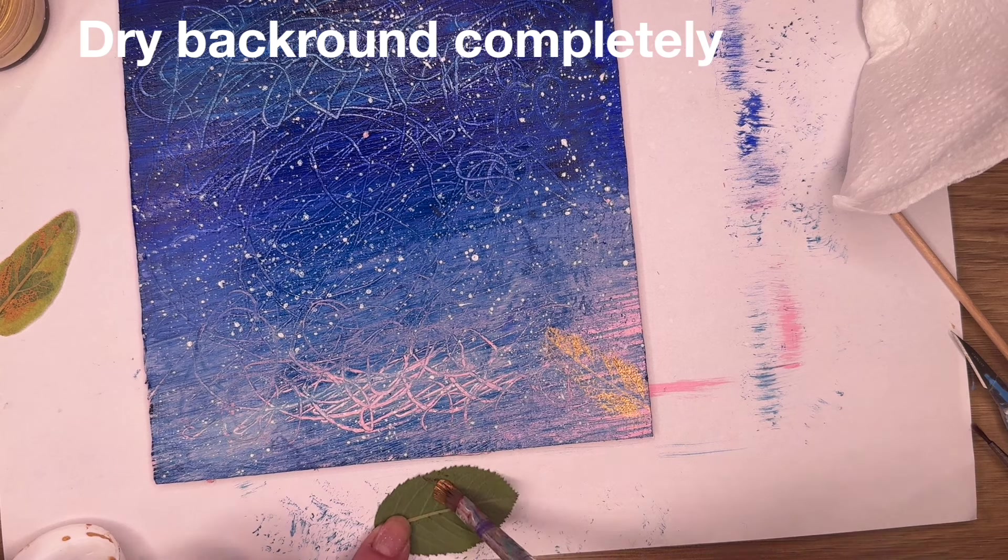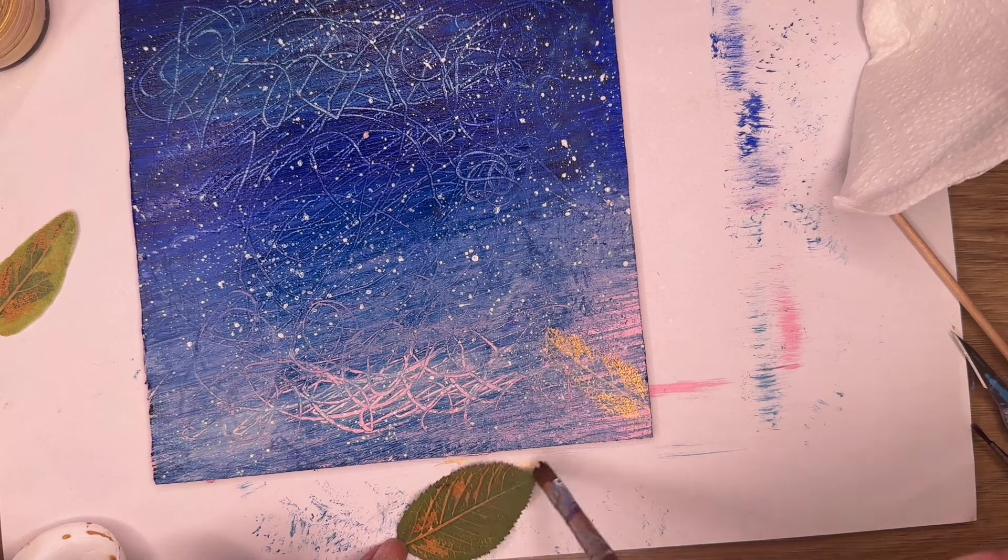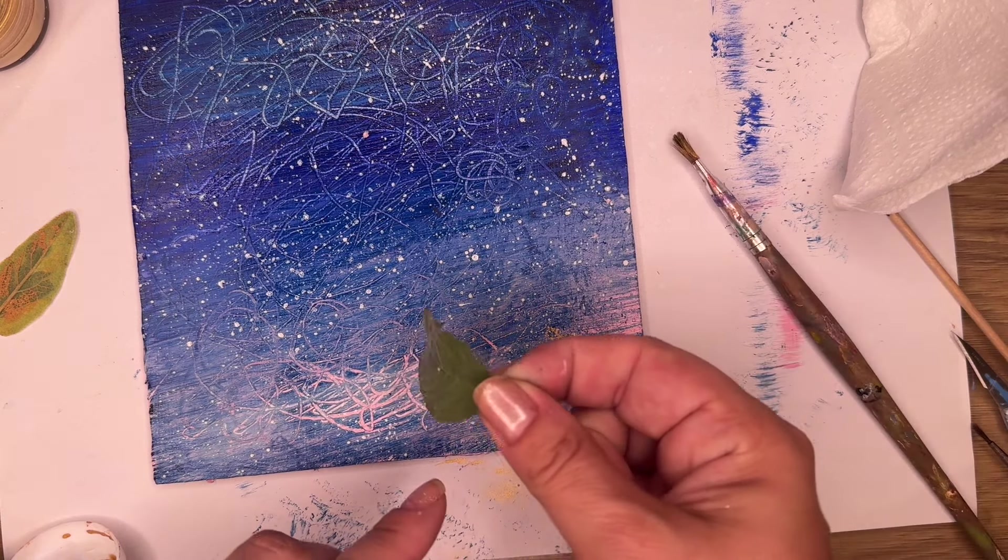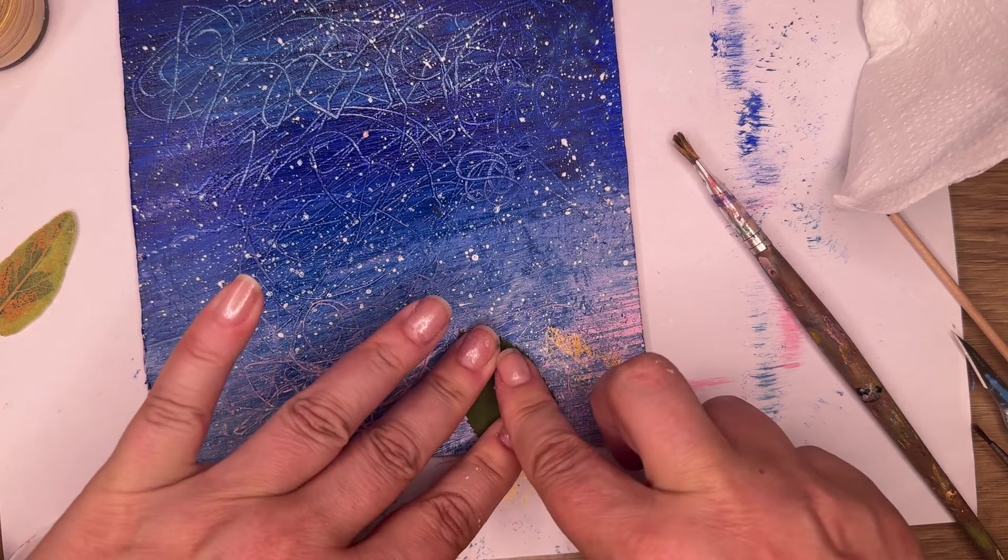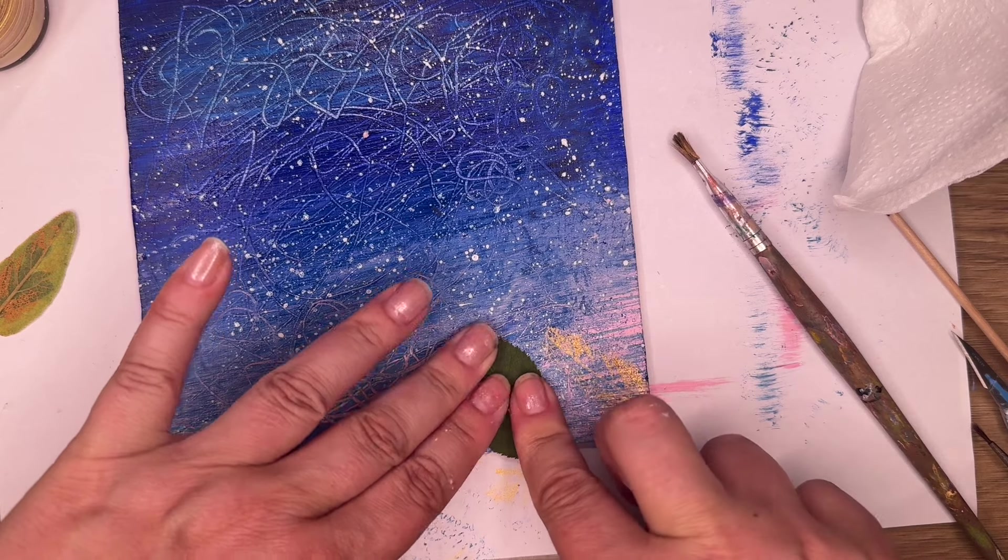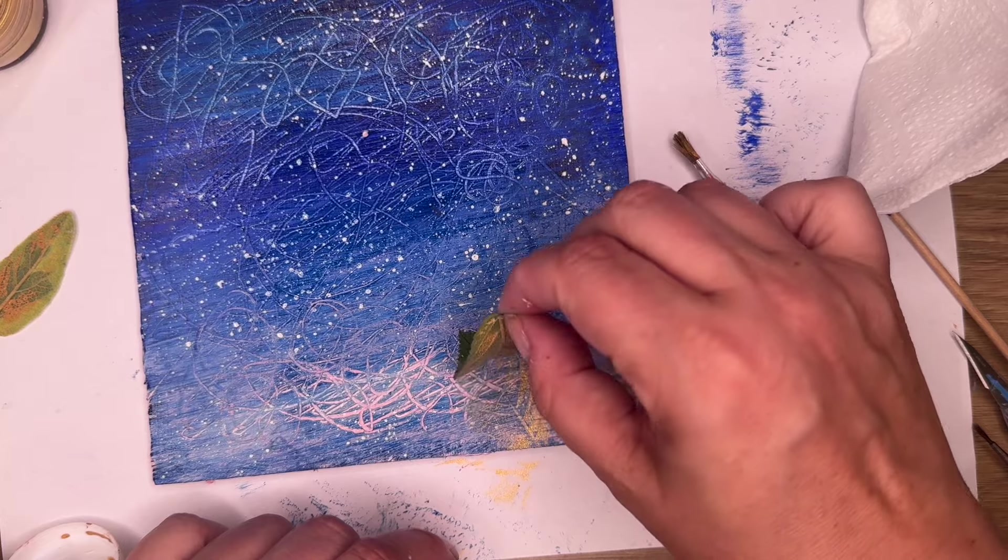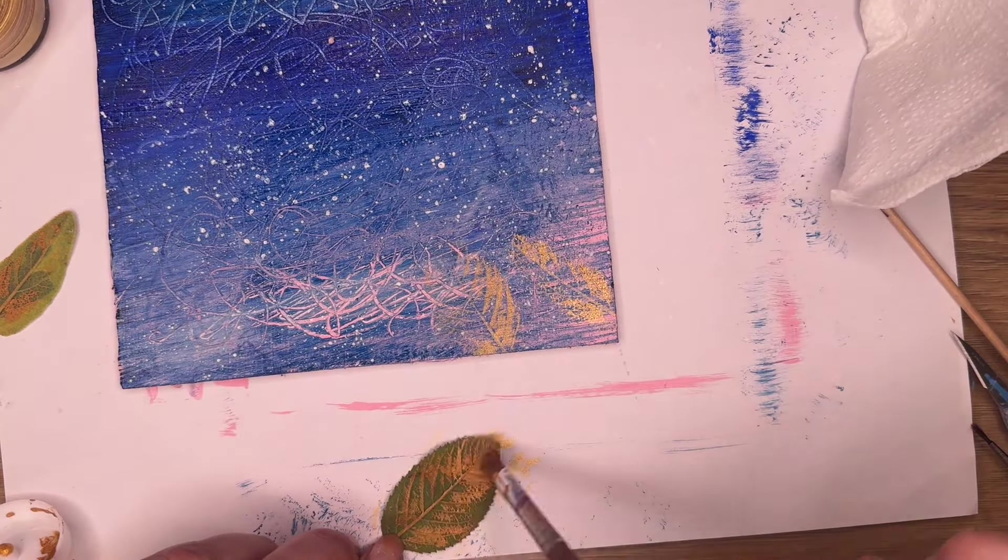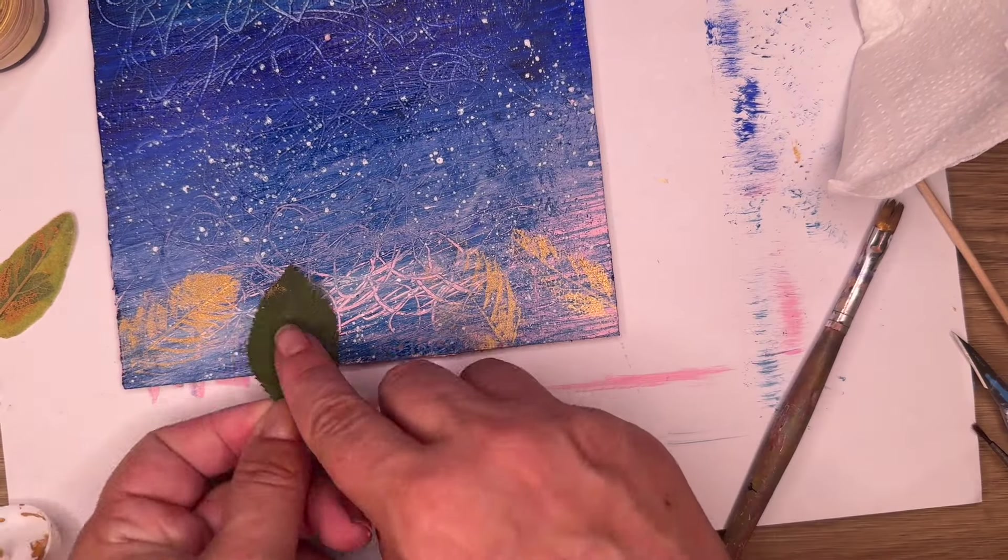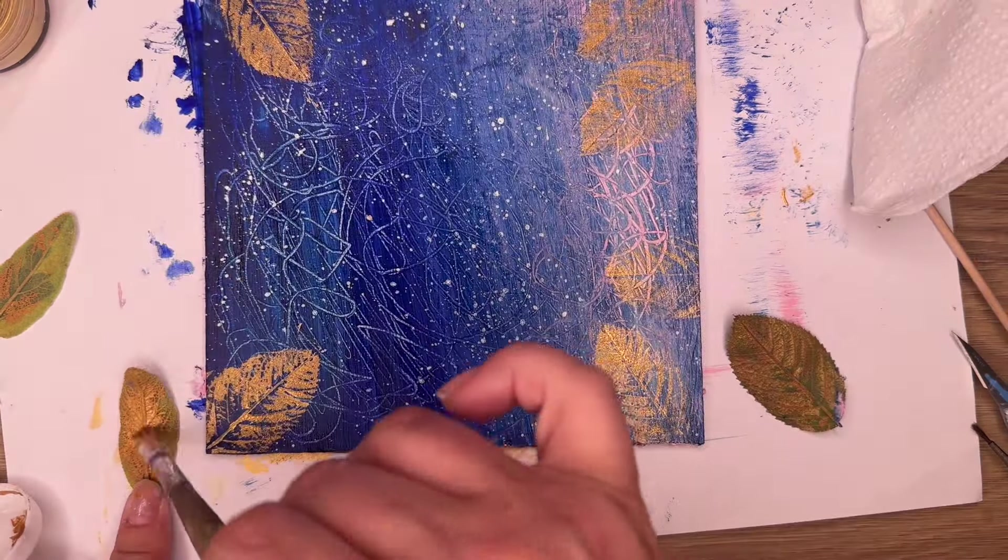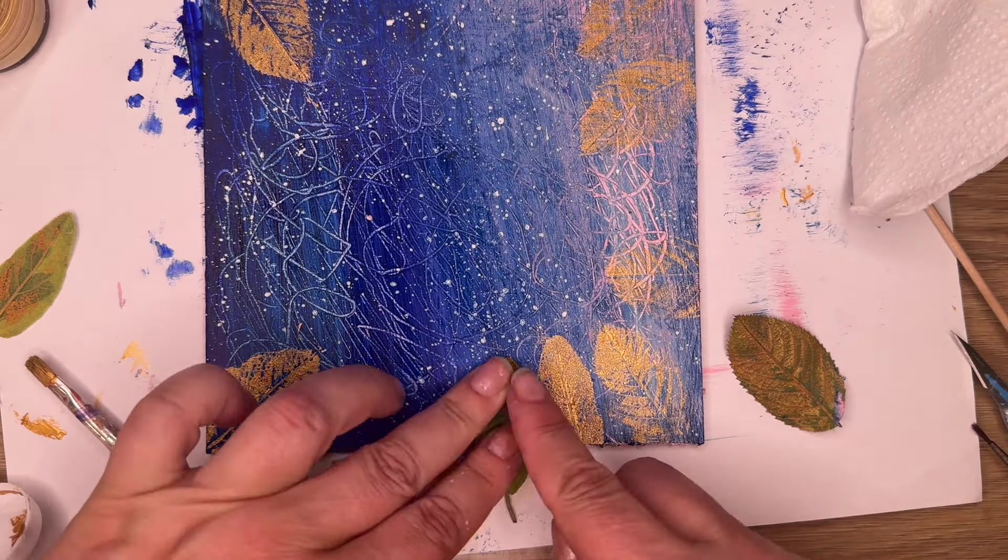And when it's done, let it completely dry because you will imprint the leaves on it. This is gold acrylic and I just covered the bottom of leaves with veins and I imprint them. So as a frame for the fairy. It looks gorgeous and nature is the best artist, so let's use it.